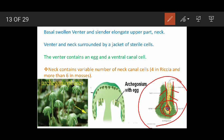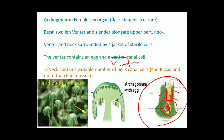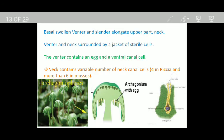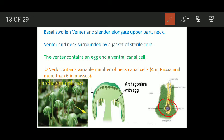Remember: the venter contains two cells — an egg and a venter canal cell. The neck contains a variable number of neck canal cells; for example, four neck canal cells in Riccia and more than six neck canal cells in mosses.